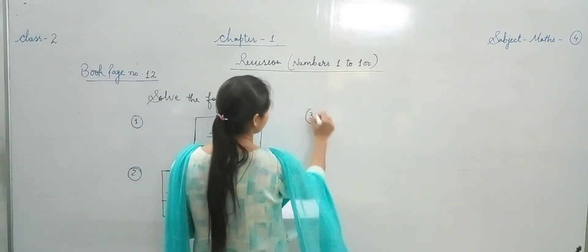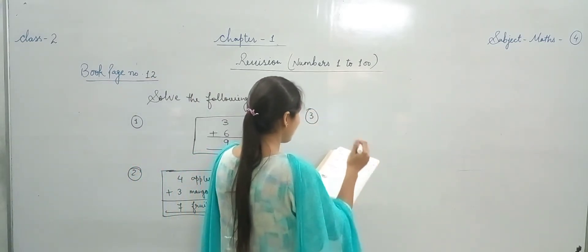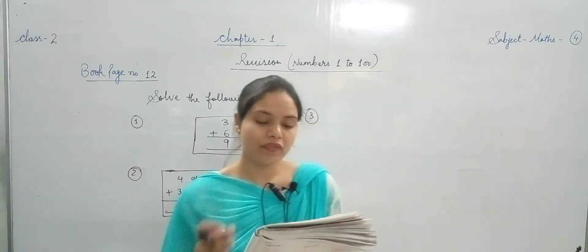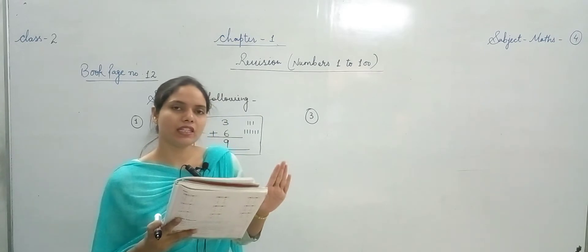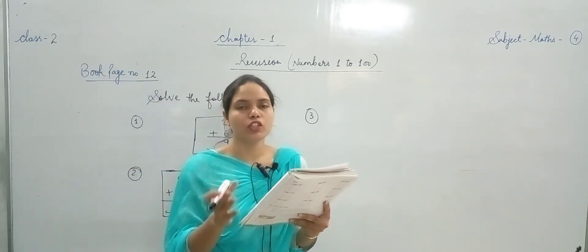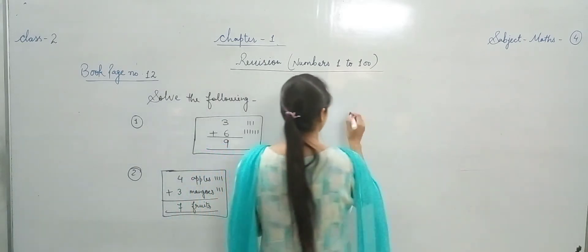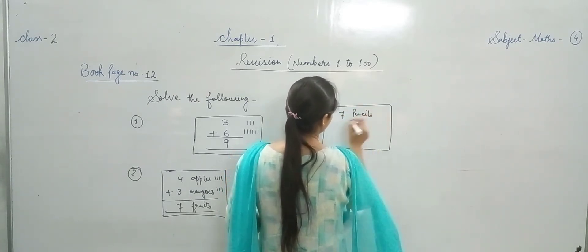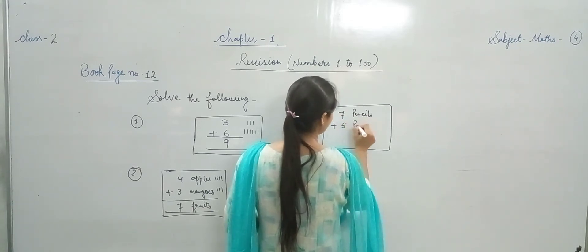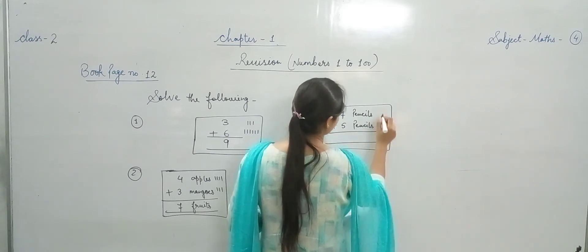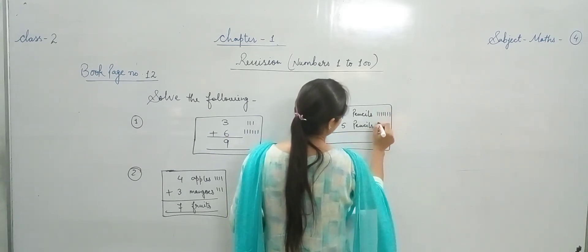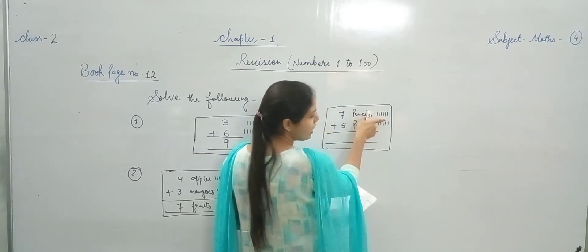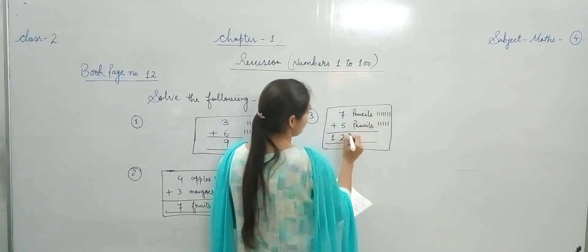Problem number 3 — Renu had 7 pencils, she bought 5 more pencils. Renu के पास 7 pencils थीं already, उसने 5 और खरीद लीं। तो 7 plus 5 कितने होंगे? Answer box में lines draw करके count करते हैं — 1 through 12. 7 plus 5 makes 12. Answer: 12 pencils.